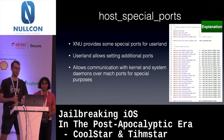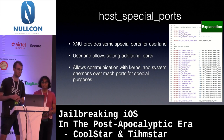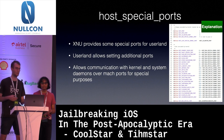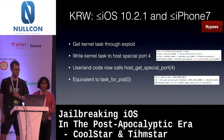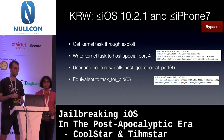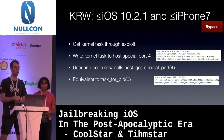Apple has a thing called host special ports. The kernel provides special ports for userland — the system daemon launchd registers several things including itself, so an app can use these APIs to get the port to launchd, which is then used for IPC. To use that for kernel read and write: up to iOS 10.1 and iPhone 7, we can get the kernel task through the exploit. Instead of patching the kernel text, we write to the data segment where the host special ports are stored, using an unused slot — port 4. Then userland code can call host_get_special_port, which returns a task port to the kernel equivalent to task_for_pid(0), and then we use the APIs to read and write kernel memory.